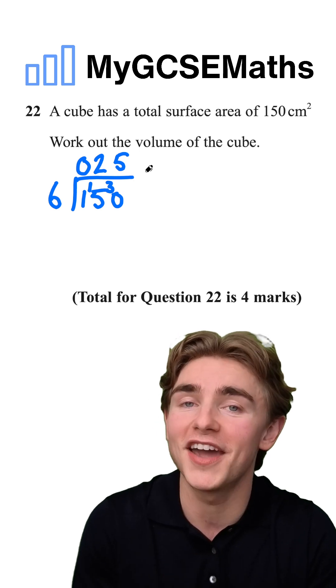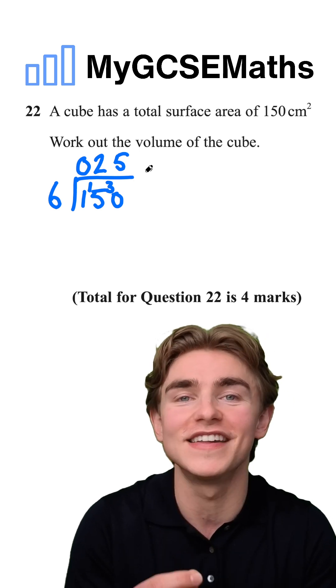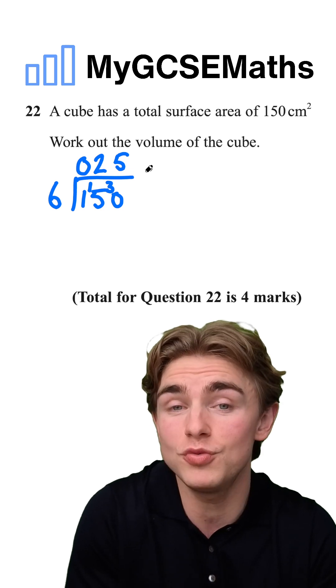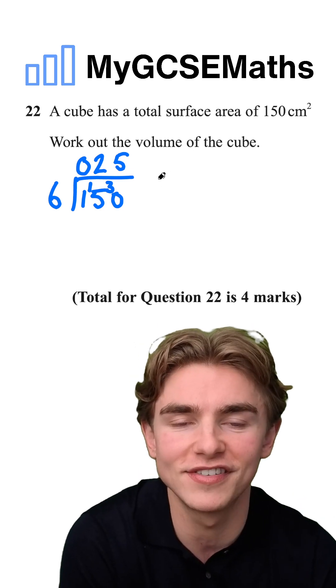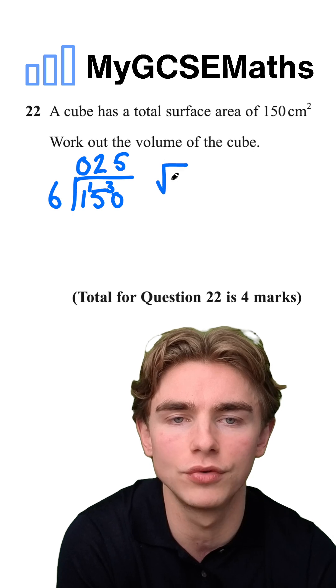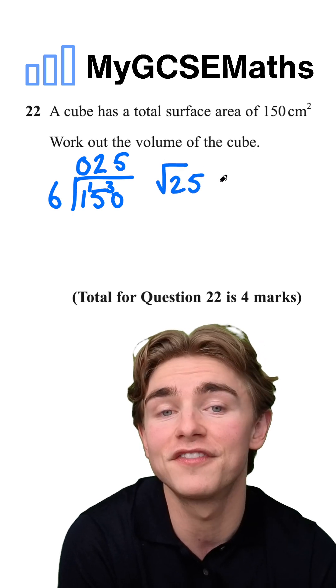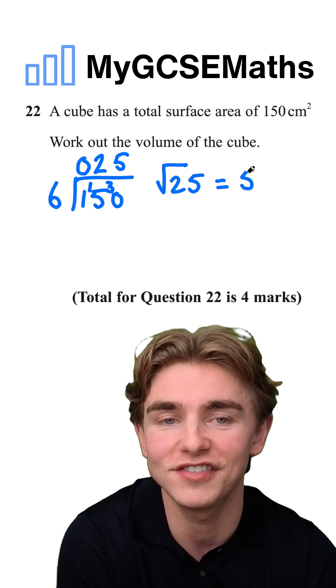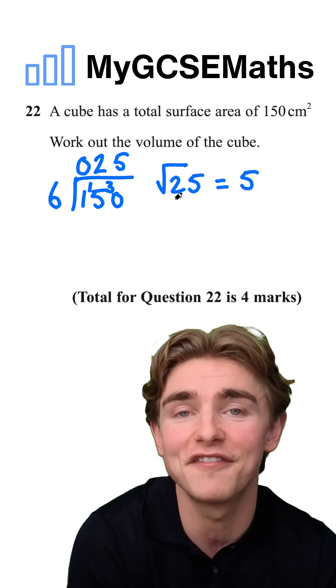Where can we go from now? Well, because each of those faces is a square, if we square root this area, we're going to get our side length. So we can work out the square root of 25. Five times by five is 25. So each of those side lengths is going to be five.